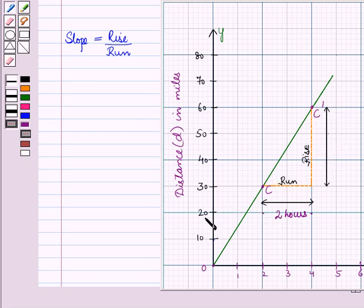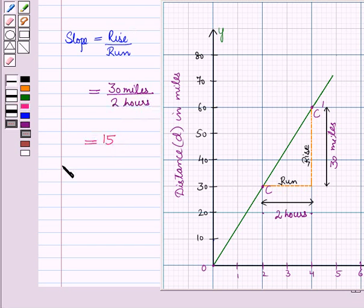And on vertical axis 1 unit equals 10 miles, so rise equals 3 units which will be equal to 30 miles. So slope is equal to 30 miles upon 2 hours which is equal to 15.